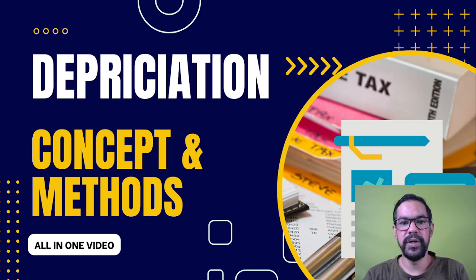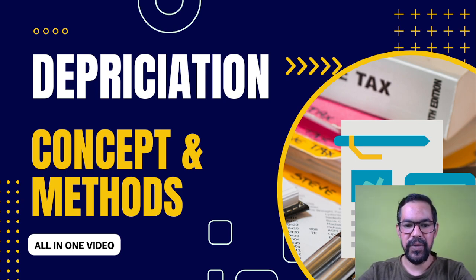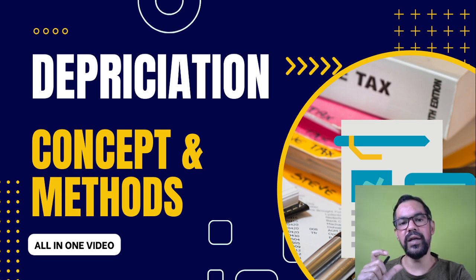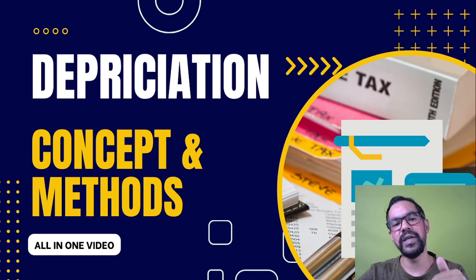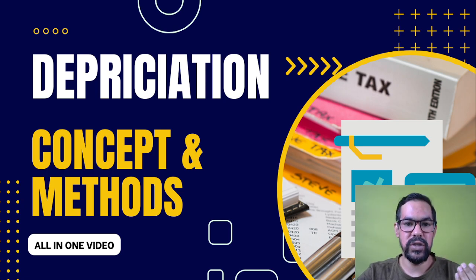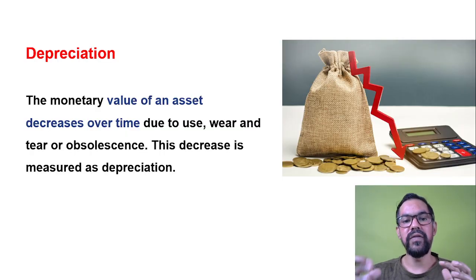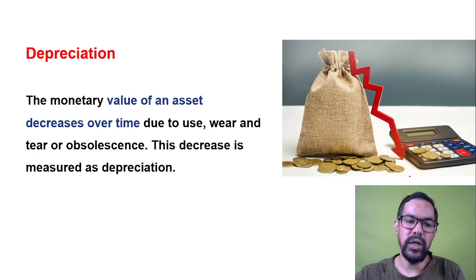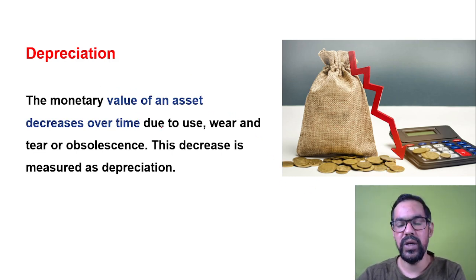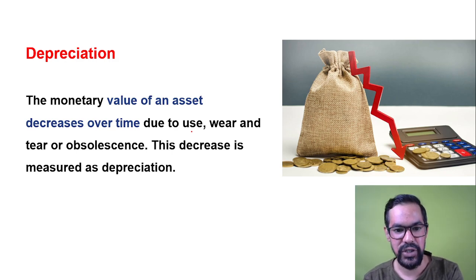Whenever we talk about depreciation, it is when the monetary value of any asset decreases due to use or due to wear and tear causes. For example, let's say you buy a laptop at 50,000 rupees. After one year the value of that laptop remains at 40,000 rupees. The monetary value of that asset decreased by 10,000, so that amount is generally known as depreciation.